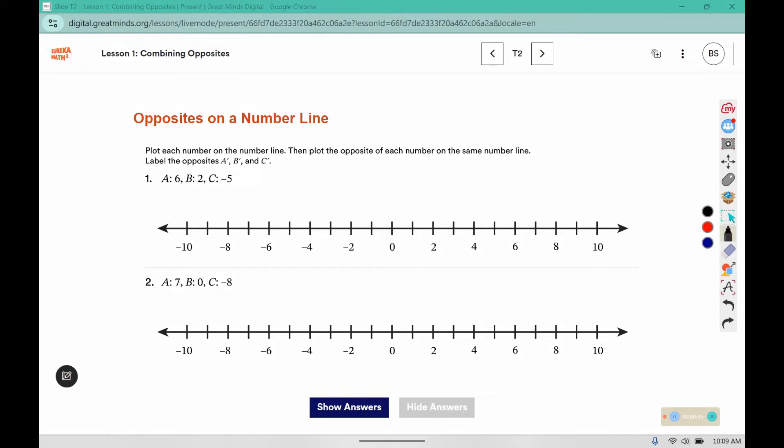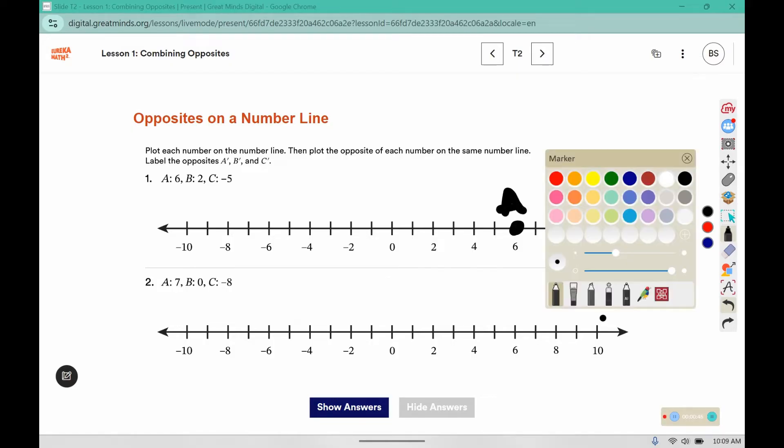That's what that little apostrophe in the top right would mean - a prime, b prime, and c prime. So I'm going to show you what it looks like for number one, and then you'll try two through four. So we have, this would be a, and then a prime would be negative six.